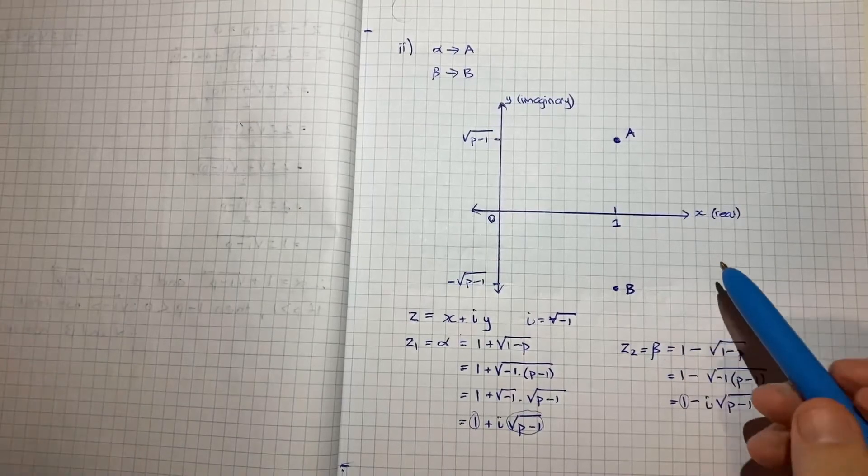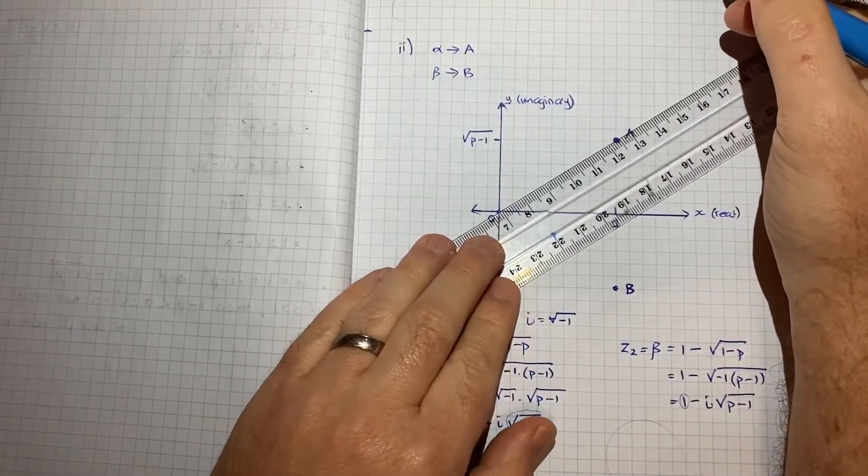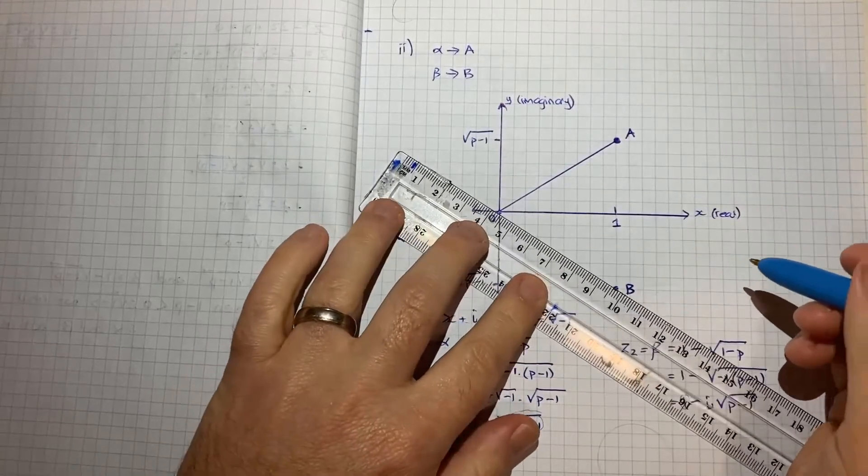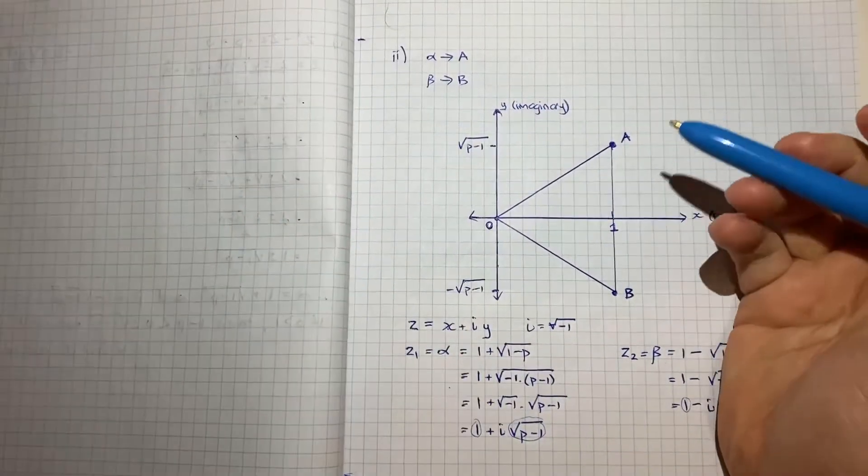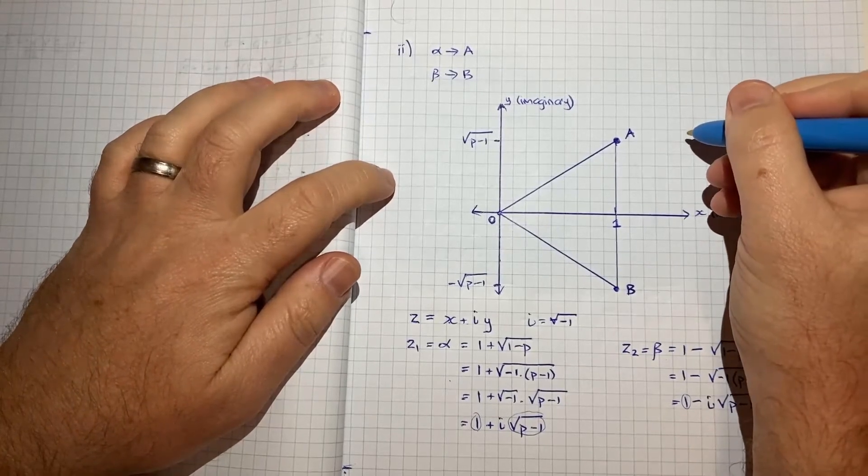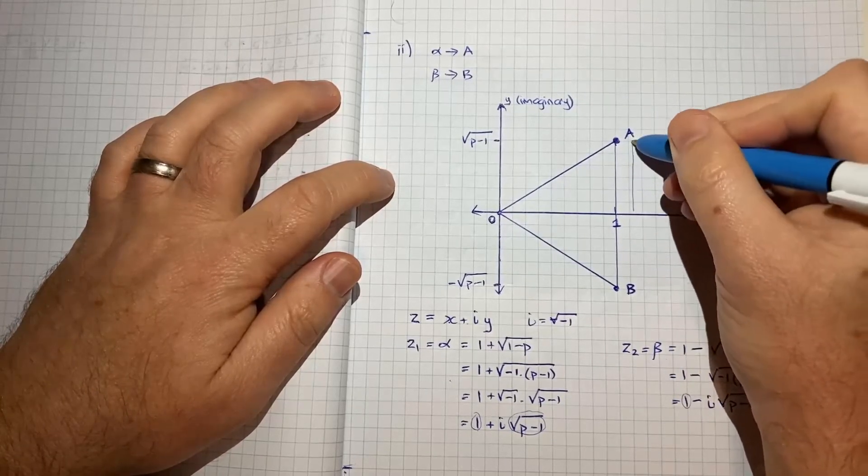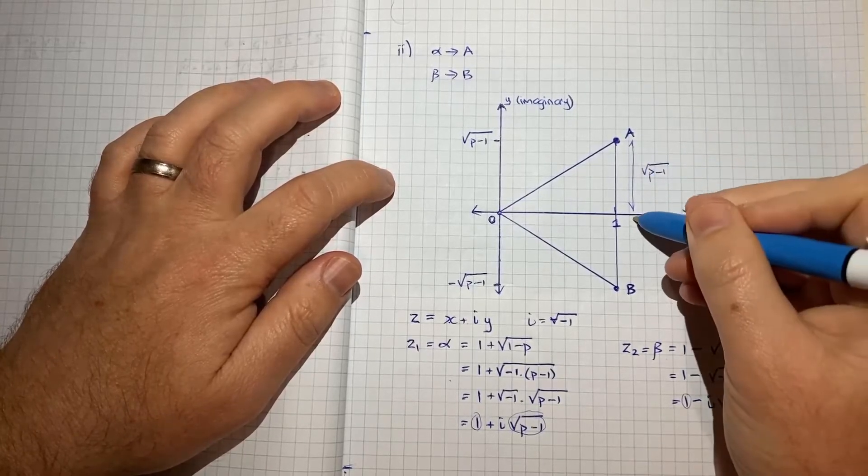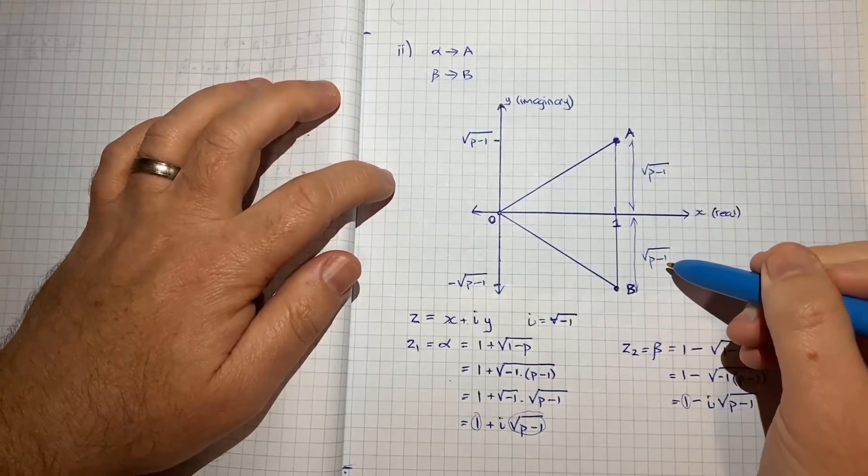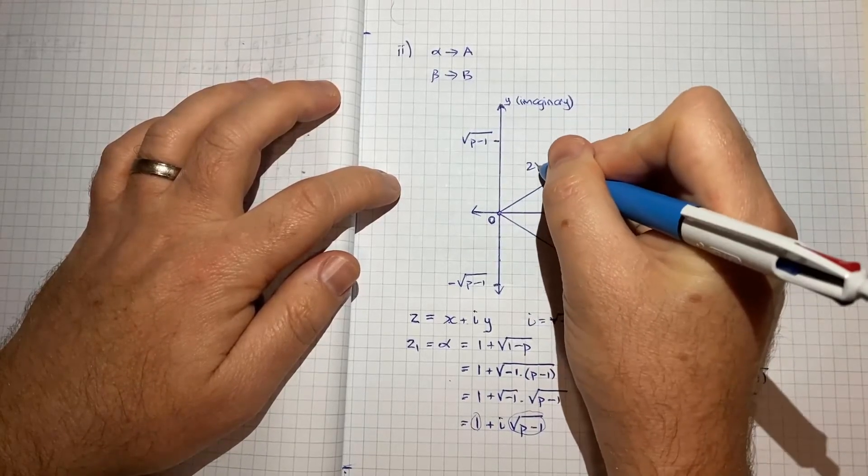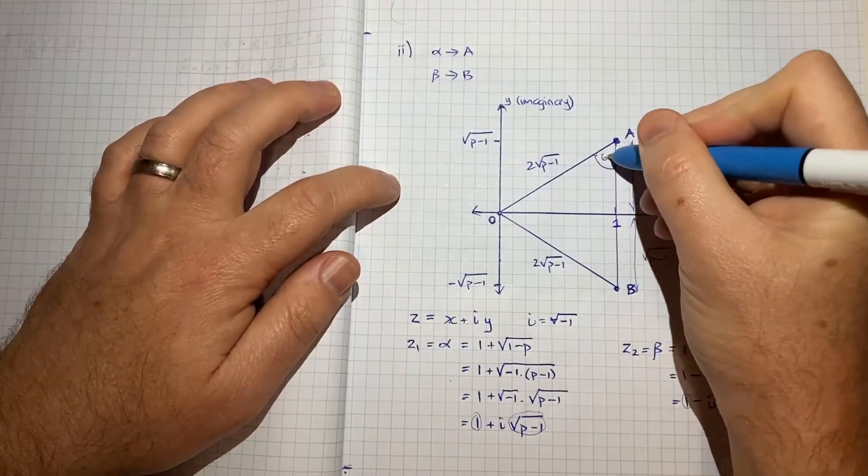Now part 3 says, or it gets us to consider, or it tells us, that this triangle, OAB, so we're told that that triangle is equilateral, or in other words, the lengths of all the sides are equal. So I know that this height here is the square root of P minus 1, and I know that this height here is the square root of P minus 1, which means the whole line is 2 root P minus 1, or double that length, which means this line must be 2 root P minus 1, and this line must be 2 root P minus 1. And I also know that each of these angles is 60 degrees.